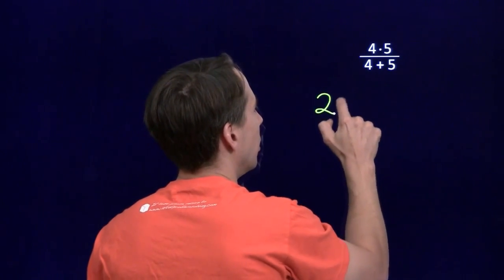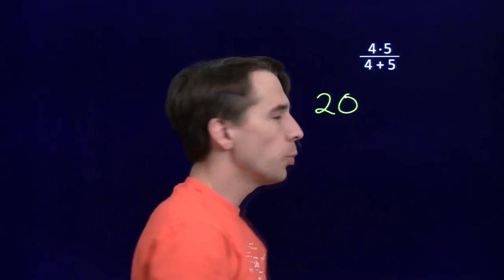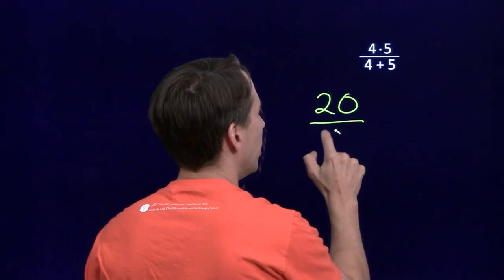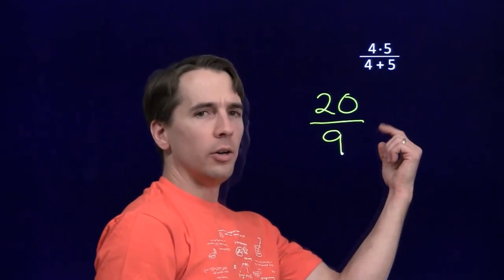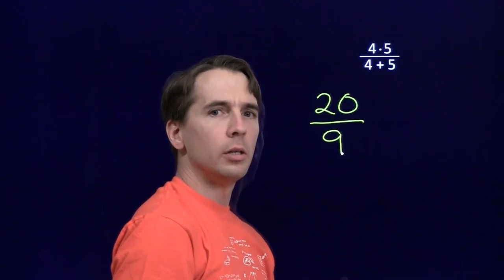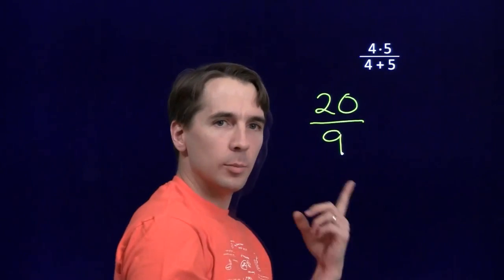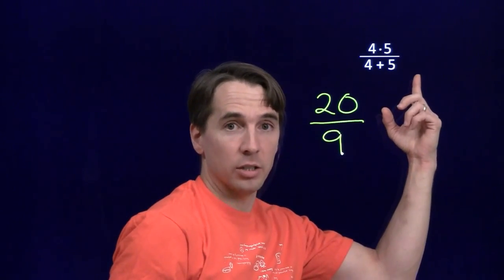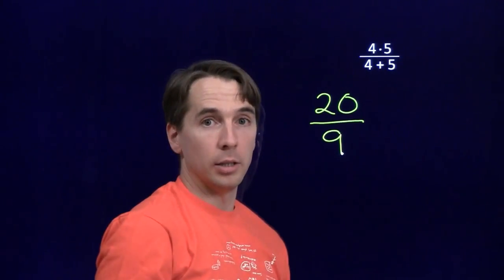The numerator comes out to 20, and 4 plus 5 in the denominator is 9. There are no common factors besides 1 here. We can't simplify this fraction, so we can't cancel anything out of this fraction. There's no canceling to be done here.